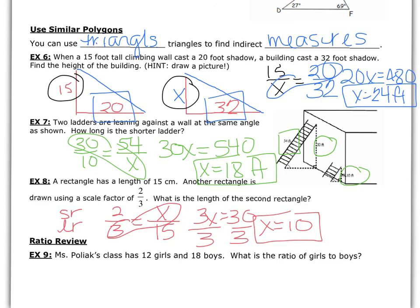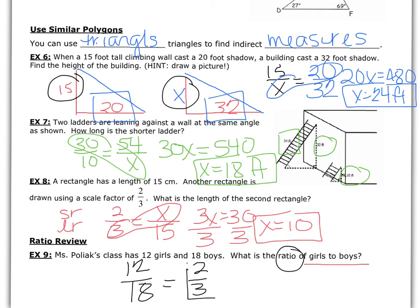To review ratios: in Ms. Poliak's class there are 12 girls and 18 boys. What is the ratio of girls to boys? Always pay attention to the order requested. We have 12 over 18; taking a 6 out of both gives us 2 thirds. So the ratio of girls to boys is 2 thirds.